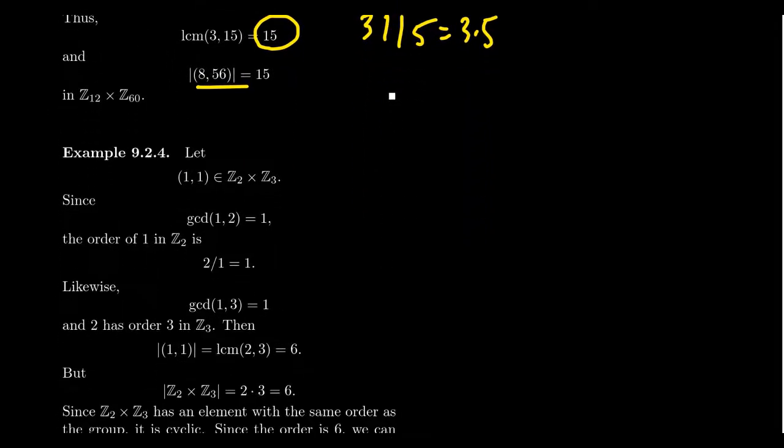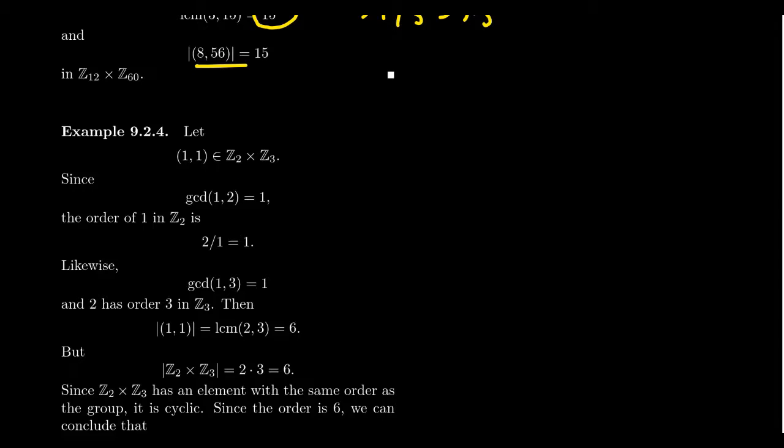Let's look at another example. If we take Z₂ cross Z₃, and let's take the element. So Z₂ is, of course, the cyclic group of order 2. Z₃ is the cyclic group of order 3. So their product will form an abelian group of order 6. Let's consider the element (1,1) inside of Z₂ cross Z₃. Now, to compute the order of 1, we probably don't need to do it, since we know 1 generates these cyclic groups with respect to modular addition every time. But if you went through the argument, the GCD of 1 and 2, of course, is 1. 2 divided by 1 is equal to 2. And therefore, the order of 1 is going to be 2. And we're viewing this as an element inside of Z₂.